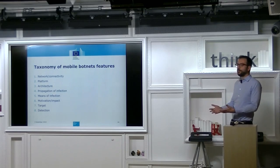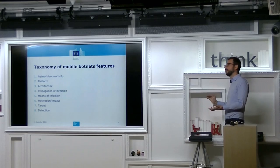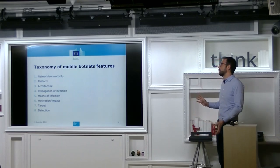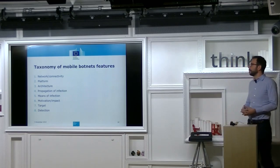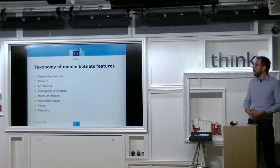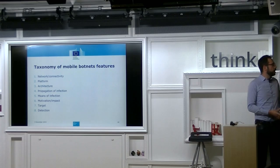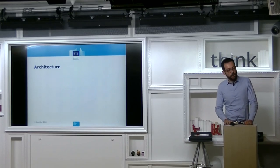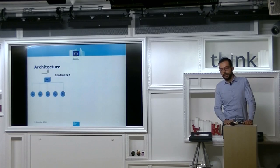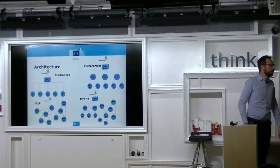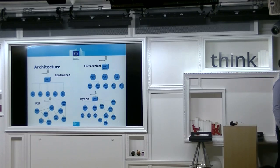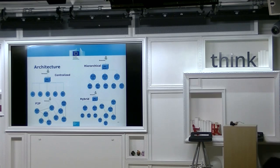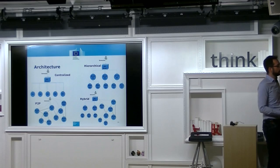When we worked together with Eric on mobile botnets, we built a taxonomy of mobile botnet features to classify the particularities of mobile botnets compared to traditional botnets. We covered different aspects: network and connectivity issues, the platforms people use, the architecture, different means to propagate infection, the means used for infection, the target of the attack, the motivation, impact, and detection. Regarding architecture, mobile botnets have four standard types: centralized, hierarchical, hybrid, and — most commonly — peer-to-peer, because proximity is a well-exploited feature in mobile botnet malware.